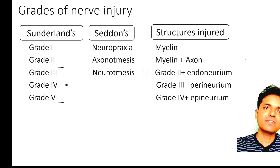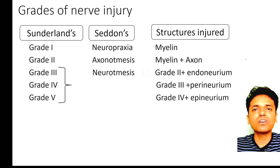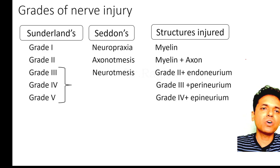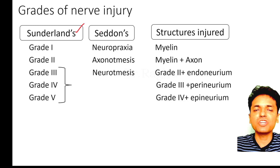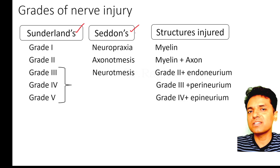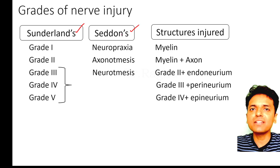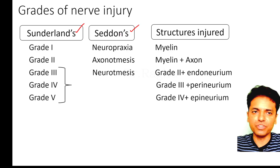Next, let's understand the different grades of nerve injury. There are two grading systems used: one is Sunderland's classification, which has five categories, and the other is Seddon's classification, which has three categories.